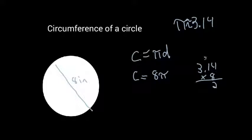8 times 4 is 32. 8 plus 3 is 11. 8 times 3 is 24 plus 1 is 25. And I got two decimals in my problem, so I got two in my answer. So my answer, the circumference, is about 25.12 inches.